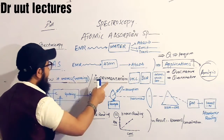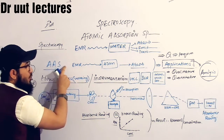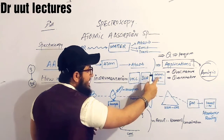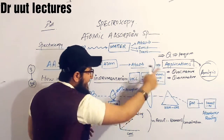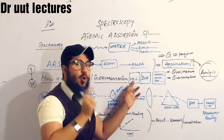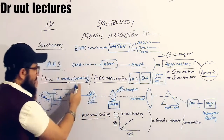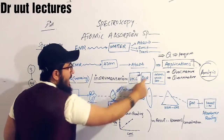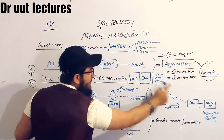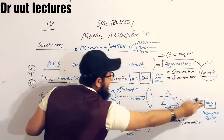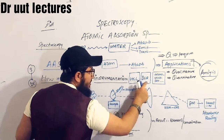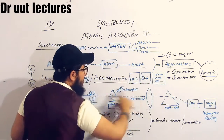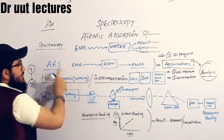The instruments included in Atomic Absorption Spectroscopy are the HCL, burner, monochromator, photomultiplier tube, and detector. HCL is the hollow cathode lamp — this portion is the hollow cathode lamp. Here is your burner. This is the monochromator. The photomultiplier tube is here and the detector is here. You must keep these components in mind when working through the instrumentation of AAS.